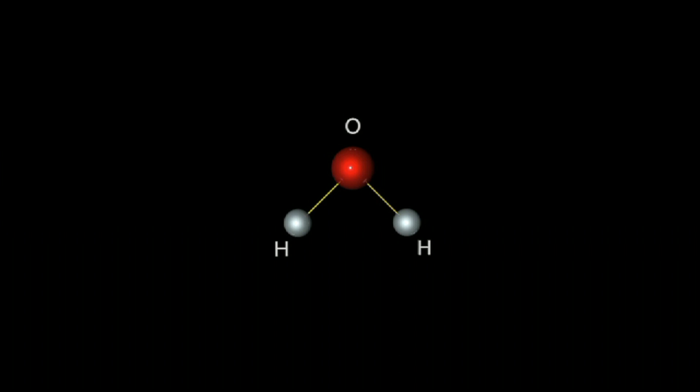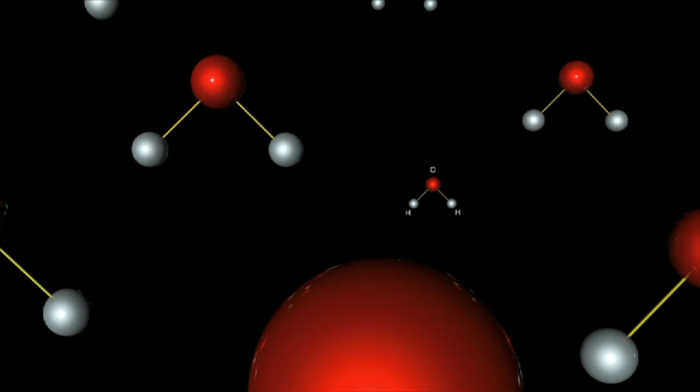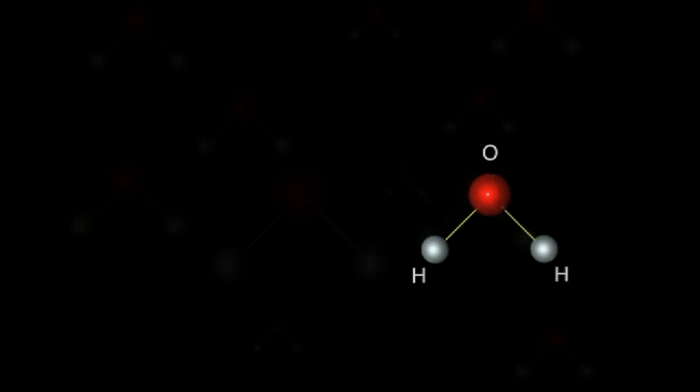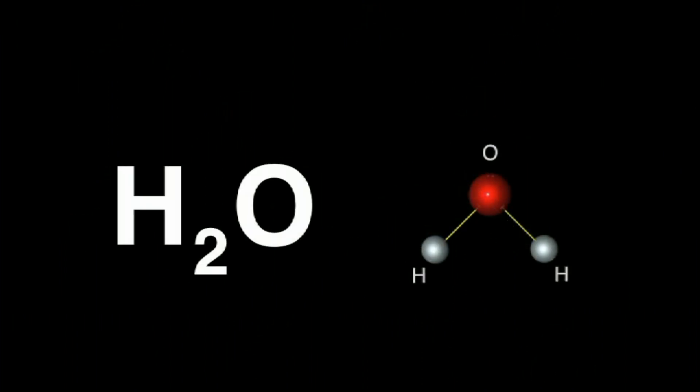For example, water is made up of two elements, hydrogen and oxygen. Each water molecule is comprised of one hydrogen atom and two oxygen atoms, giving water its chemical formula, H2O.